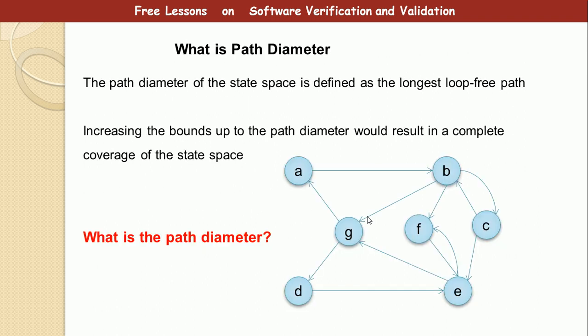Now what is path diameter? Path diameter of a state space or a finite state machine is the longest loop-free paths in that model, or FSA or LTS (Label Transition System). Now if you increase the bound up to the path diameter, that will actually result in a complete coverage of the state space.